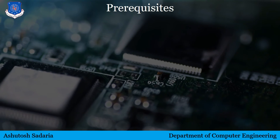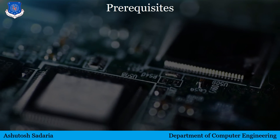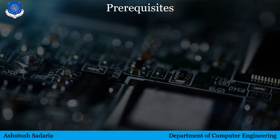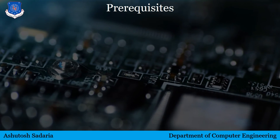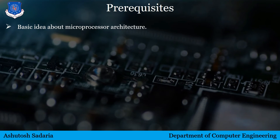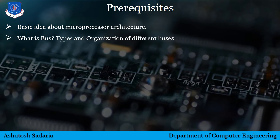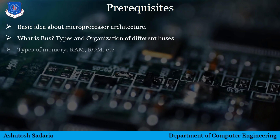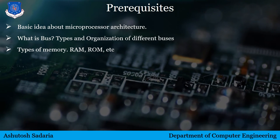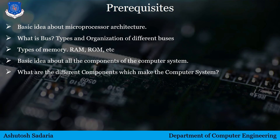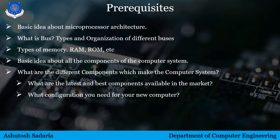Here are some of the prerequisites you should know before you start to learn this subject. Some of those you have already studied in your previous semester, and some are general things you should know in your technical life. The first is a basic idea about microprocessor architecture. The second is what is a bus and the types and organization of different buses. Next is types of memory — RAM, ROM, etc. — and a basic idea about all the components of a computer system, including the different components that make up the computer system and the best configurations available in the market.